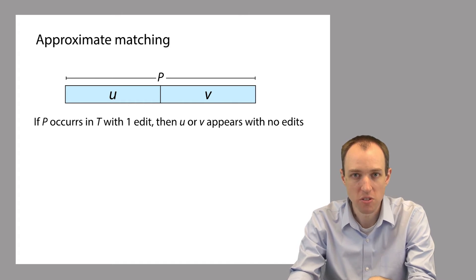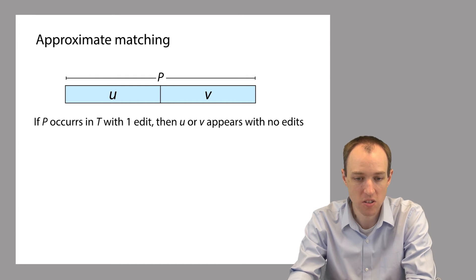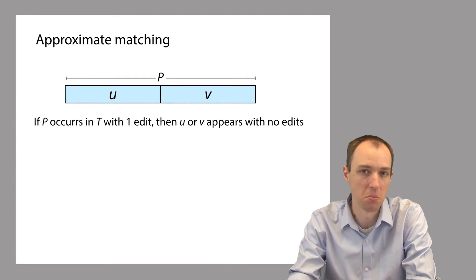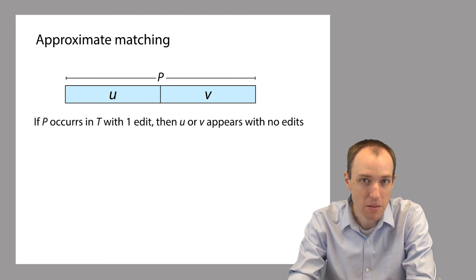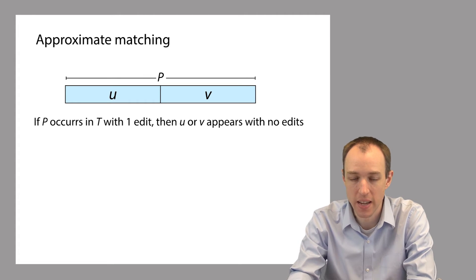So one of them will still have to match exactly, which means that we can start to solve this approximate matching problem by using an exact matching algorithm, any exact matching algorithm, to search for occurrences of u and v within the text T.